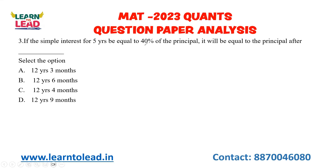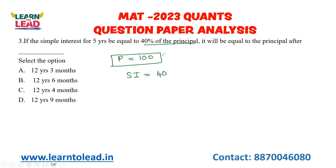Now, if the simple interest for 5 years is equal to 40% of the principal, after how many years will the simple interest be equal to the principal? Let us take the principal as 100. Simple interest for 5 years is 40% of 100, which is 40. For 1 year, it is 40 divided by 5, which is 8 rupees.